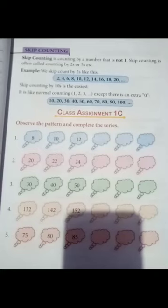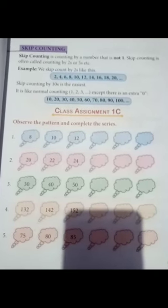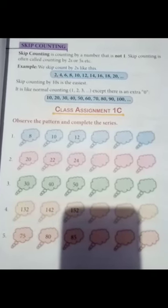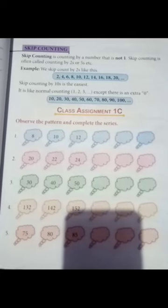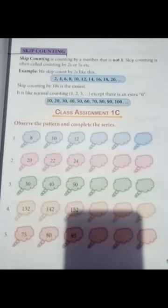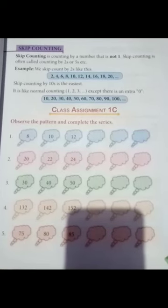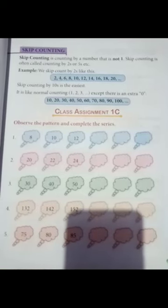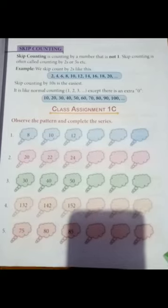20 minus 10 equals 10. Then 20 plus 10 equals 30, 30 plus 10 equals 40, 40 plus 10 equals 50, 50 plus 10 equals 60, 60 plus 10 equals 70, 70 plus 10 equals 80, 80 plus 10 equals 90, 90 plus 10 equals 100.